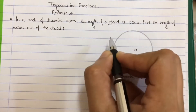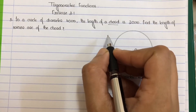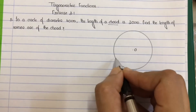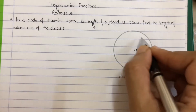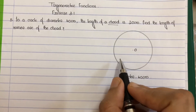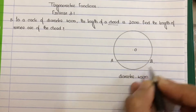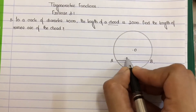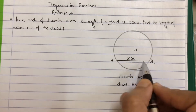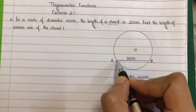First, define chord. A chord is a line segment whose endpoints lie on the circumference of the circle. Let AB be the chord, then the length of AB is 20 centimeters, with points A and B on the circumference of the circle.